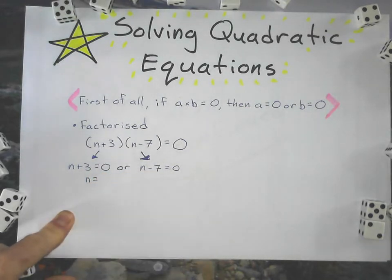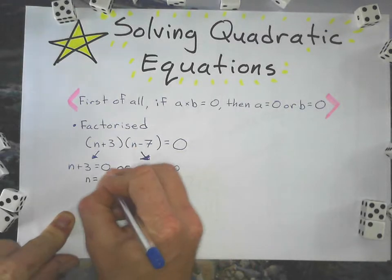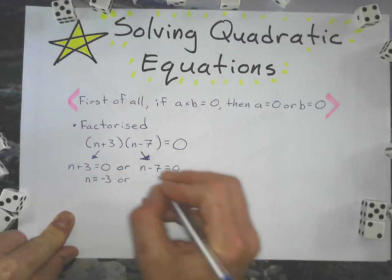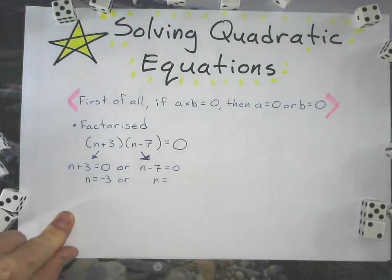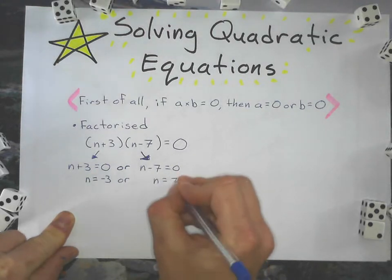Using the rules of solving linear equations, where I take this term and move it to the other side, changing its sign, I get two solutions: n equals negative 3 or n equals positive 7.